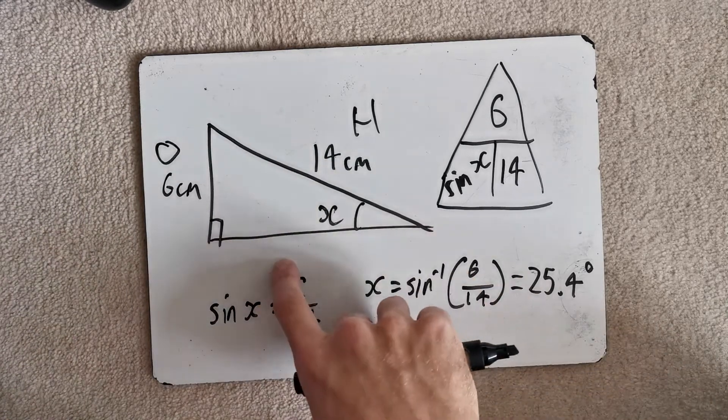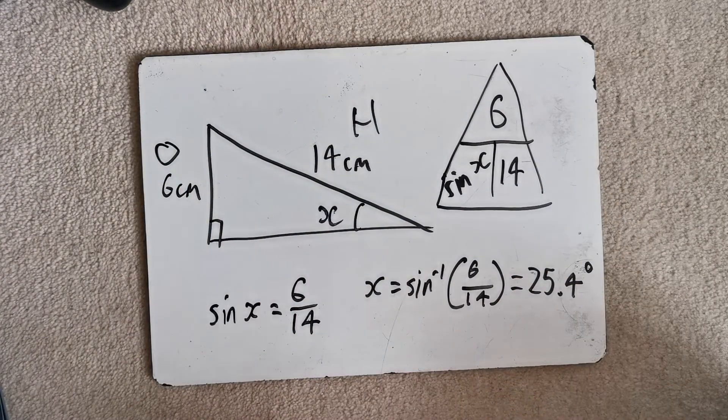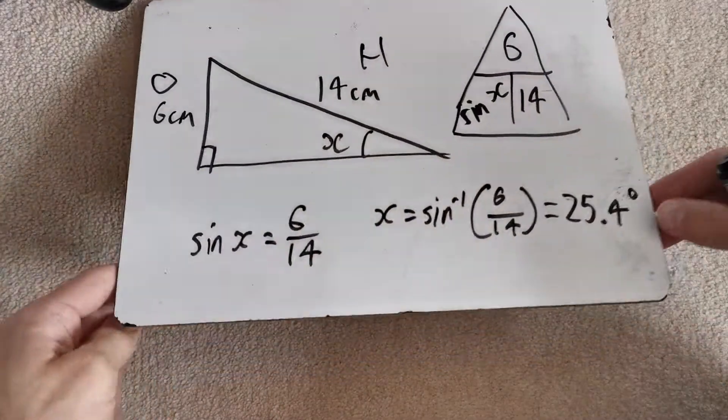Similarly, if you've got the adjacent and the hypotenuse, you're going to use shift cos. If you've got the opposite and the adjacent, we're going to use shift tan. Let's do an example of that, shall we?